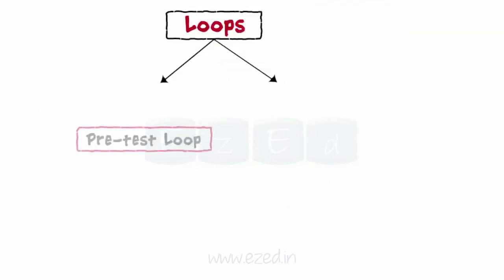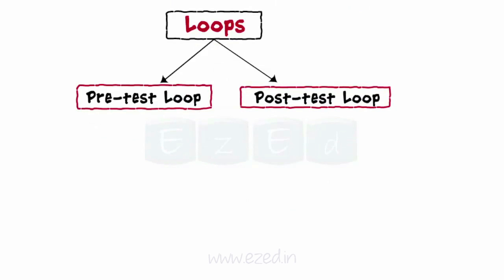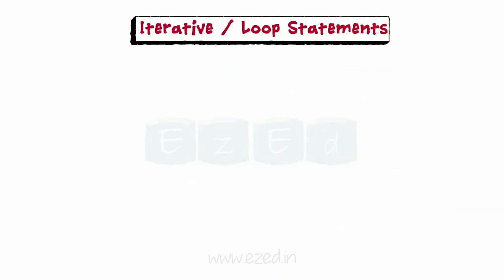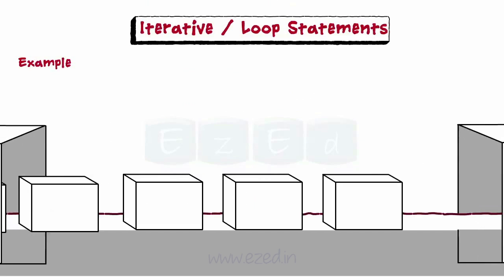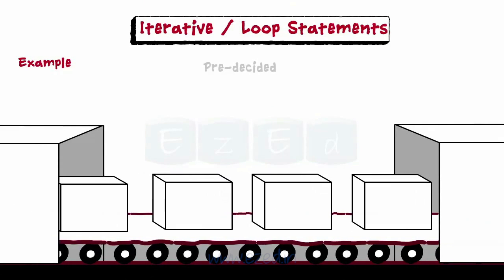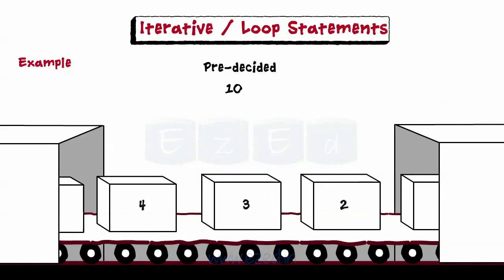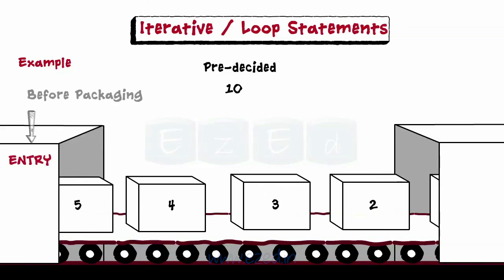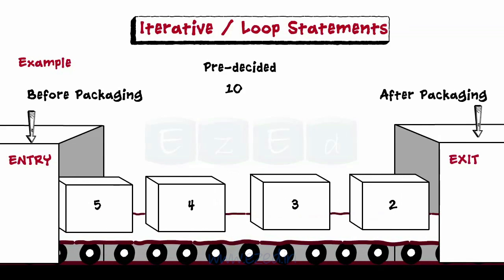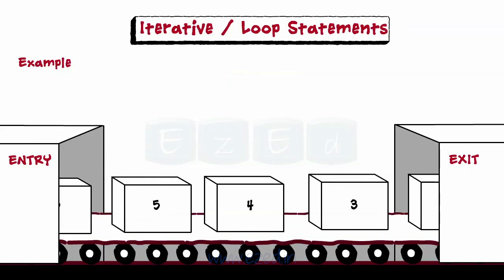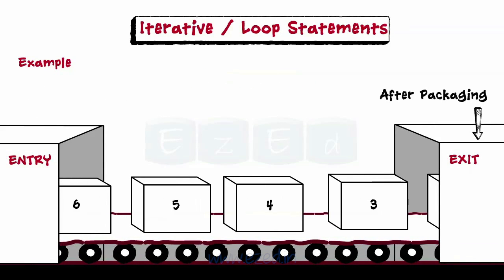Loops can either be a pretest loop or a post-test loop. C has three loop constructs, namely for, while, do-while, out of which while and for are pretest loops, and do-while is a post-test loop. Let's take an example of products being packed on a conveyor belt. If it is pre-decided that only ten products are supposed to be packed, then a count on the number of products can be kept at entry level before packaging, or at exit after packaging. If the count is determined before packaging, then it is called pretesting; or else if determined at exit level, then it is termed post-testing.